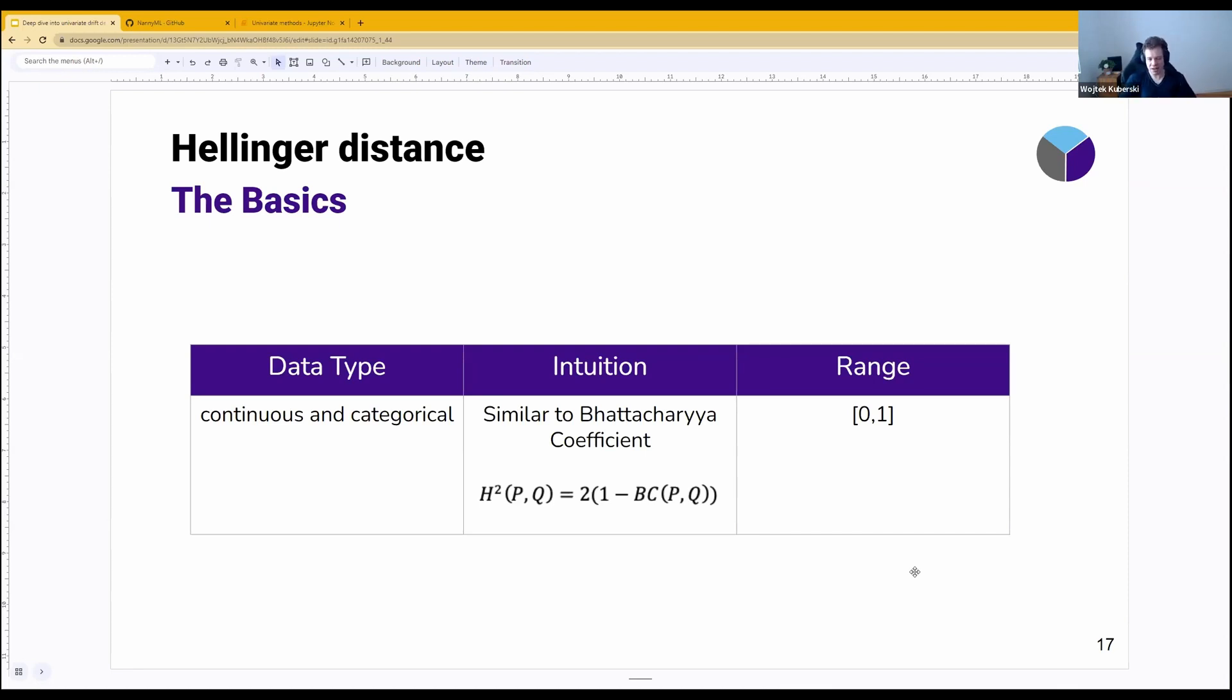But again, it is not a distance in the sense that it does not fulfill the triangle inequality. So we decided to implement Hellinger distance instead because it fulfills triangle inequality, which makes it slightly easier to interpret and work with. Just like Jensen-Shannon distance, it is in the zero to one range. Zero is no drift, one is significant drift.